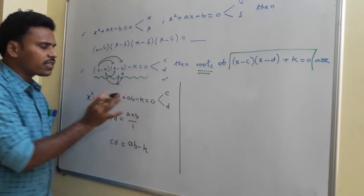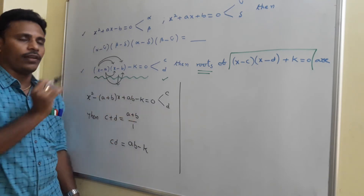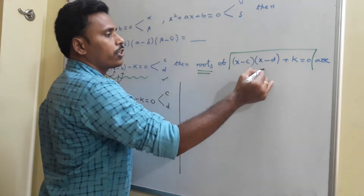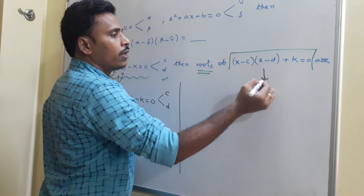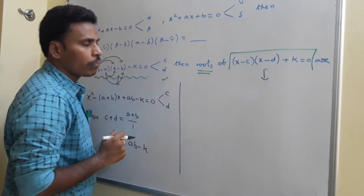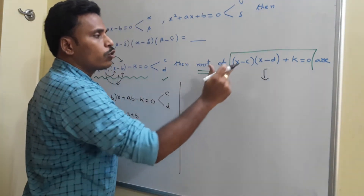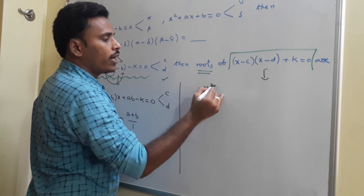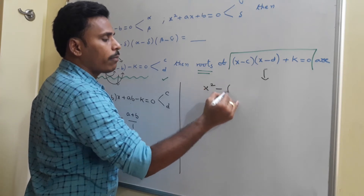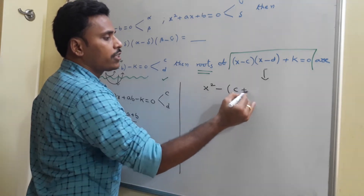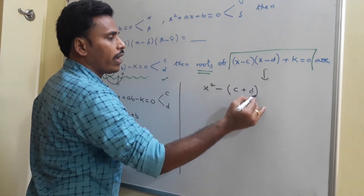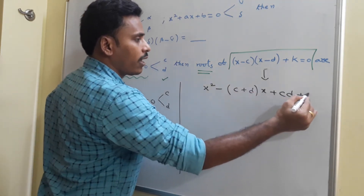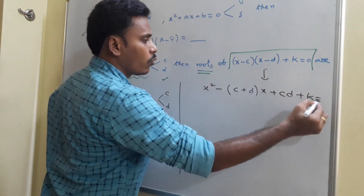Now think about the second equation. To find its roots, simplify it. On simplification, you get x² minus (c+d)x plus cd plus k equals 0.